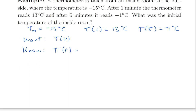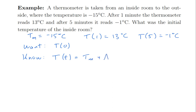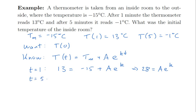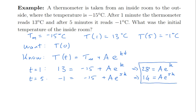We know from the previous slide that the temperature at time t is Tm + A·e^(kt). So I can take that solution and plug in my two pieces of data. At t = 1, I get 13 = −15 + A·e^k, which gives 28 = A·e^k. At t = 5, I get −1 = −15 + A·e^(5k), which gives 14 = A·e^(5k). From my two pieces of data, I've got two equations and two unknowns. They're non-linear equations because of the exponential, so I need to be a little careful.